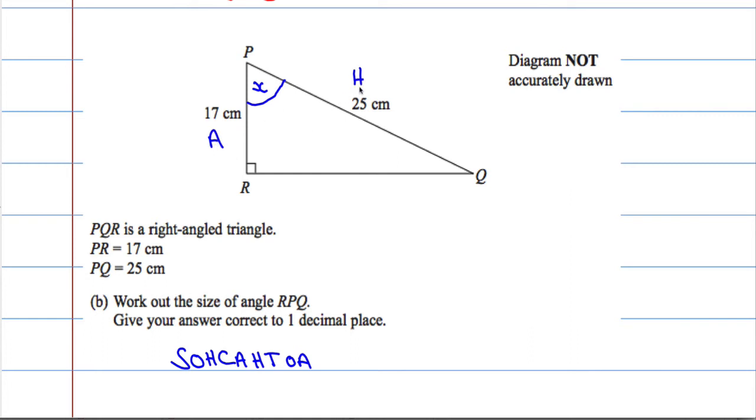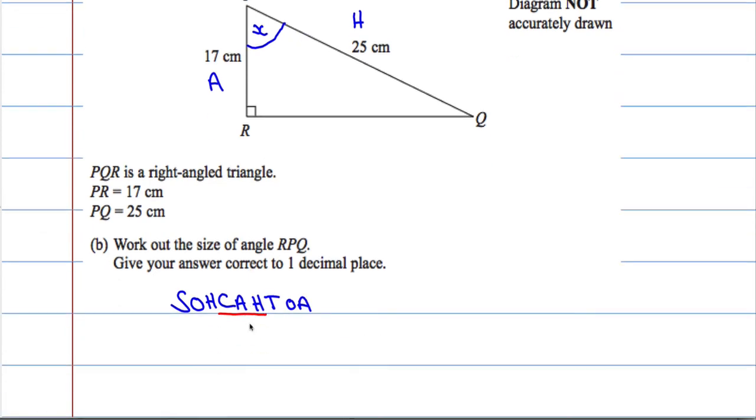We've got adjacent and hypotenuse. Which of these trig ratios are we going to use? Using A and H together, it must be cosine, CAH. Let's write down that relationship.